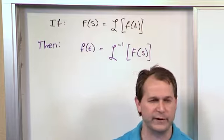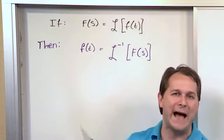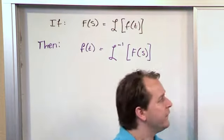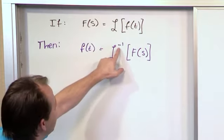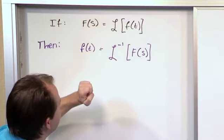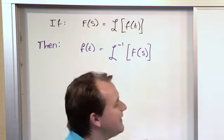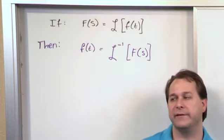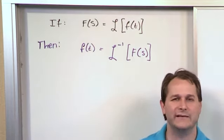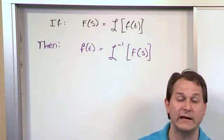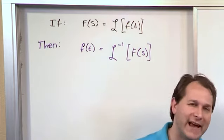It wouldn't be too useful if we could transform to S, and then we'd try to go backwards and we're unable to do it. So this notation, this curly L with a negative 1, means inverse Laplace Transform there. And you'll see how we do these inverse Laplace Transforms as we go through the course. Basically, it's going to be boiling down to recognizing what they look like, and our table of Laplace...